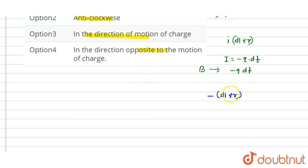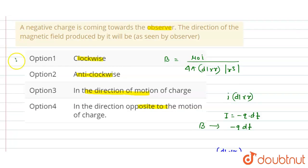Therefore, a negative charge coming towards the observer produces a magnetic field in the clockwise direction. This matches option 1, so this is the right answer. I hope you understood, thank you.